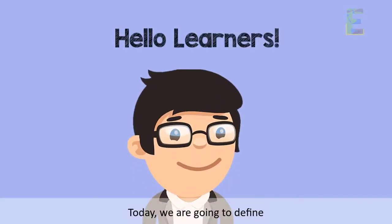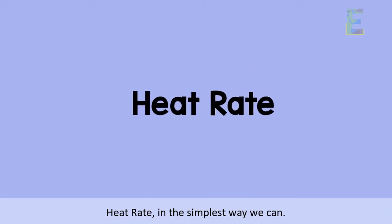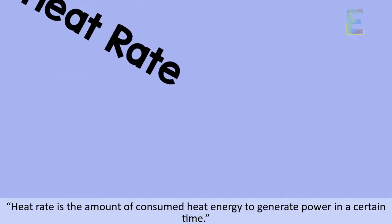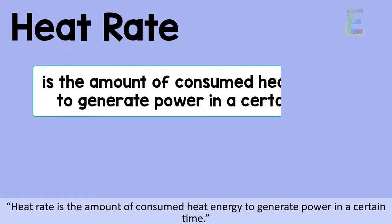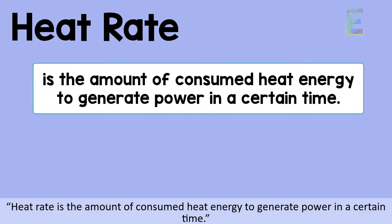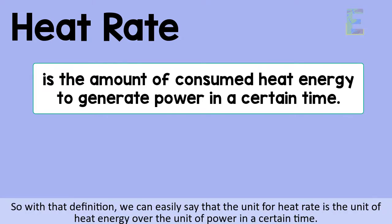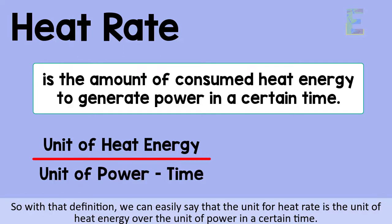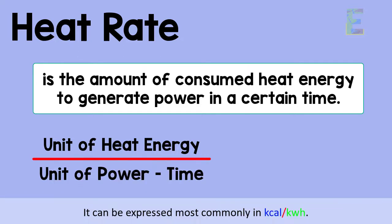Good day learners! Today we are going to define heat rate in the simplest way we can. The best and easiest meaning we can give heat rate is: heat rate is the amount of consumed heat energy to generate power in a certain time. We can easily say that the unit for heat rate is the unit of heat energy over the unit of power in a certain time.